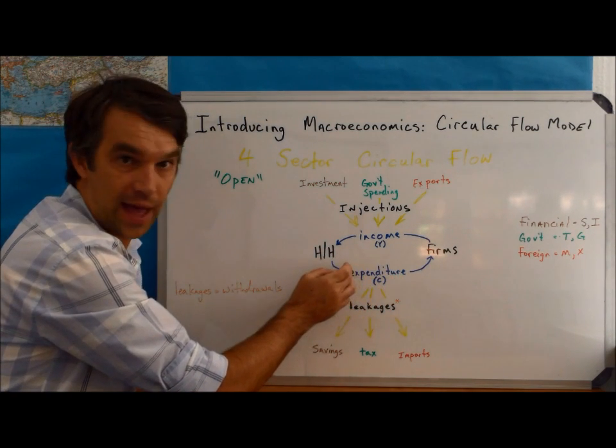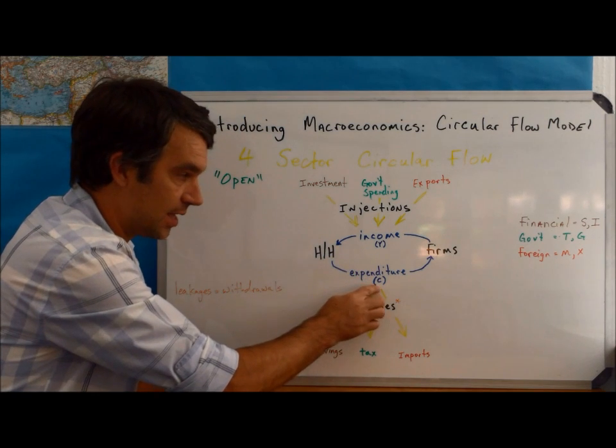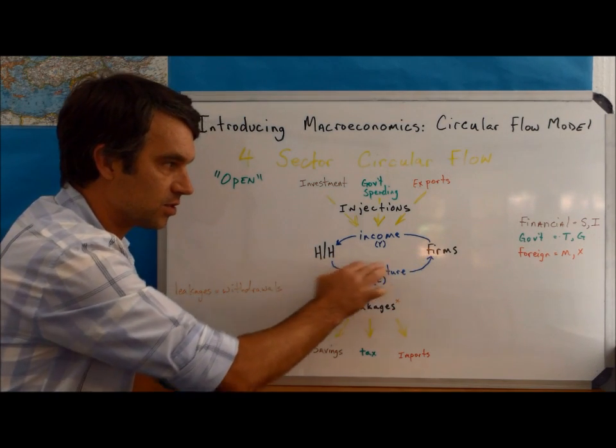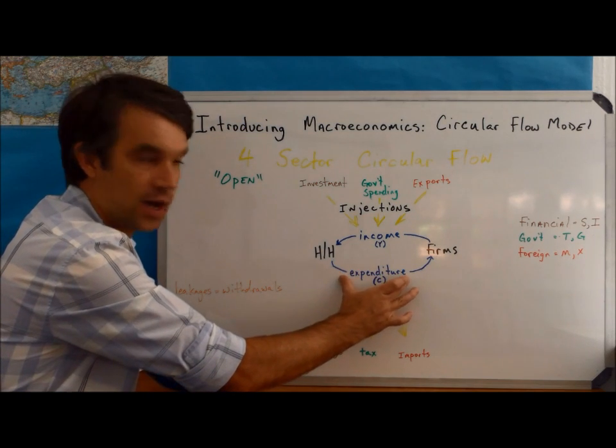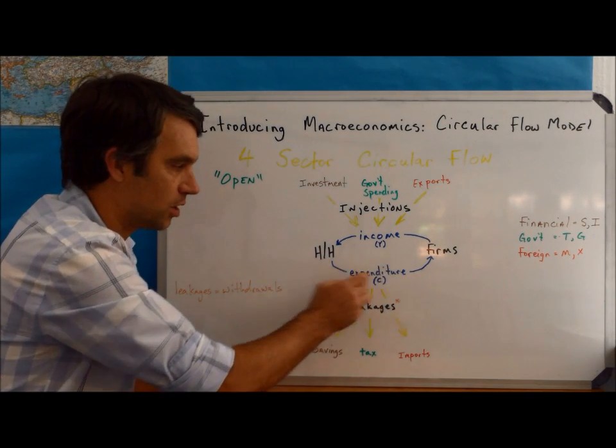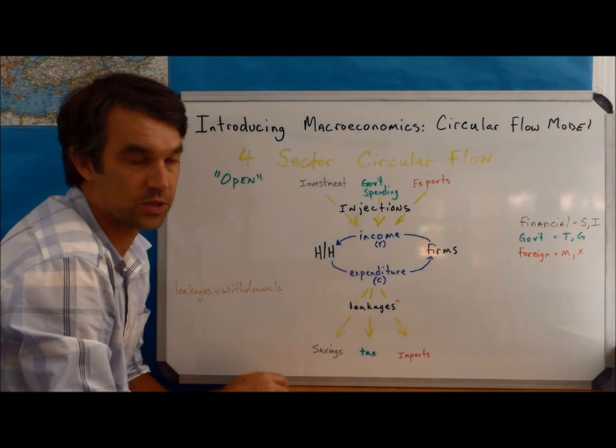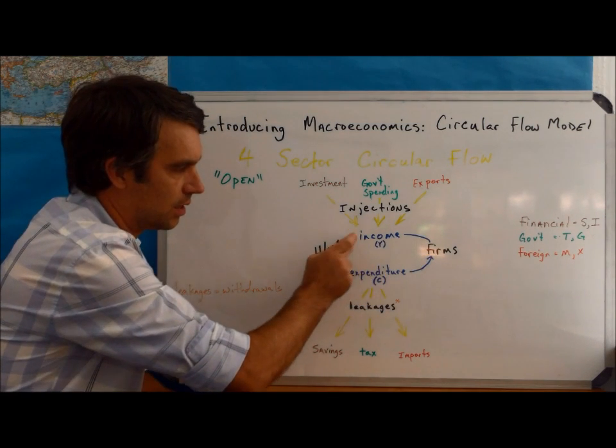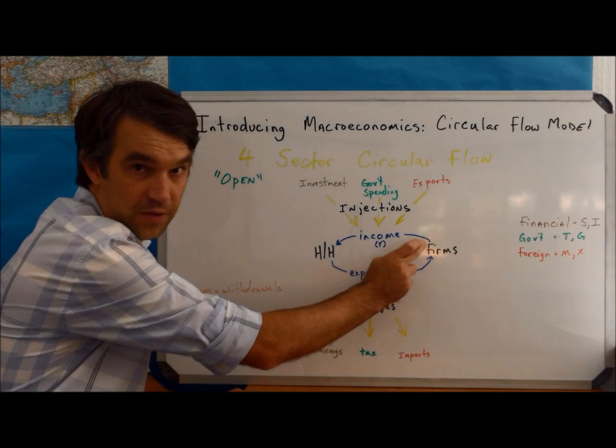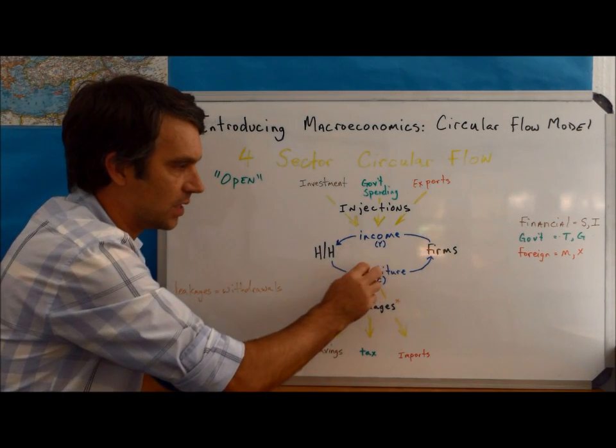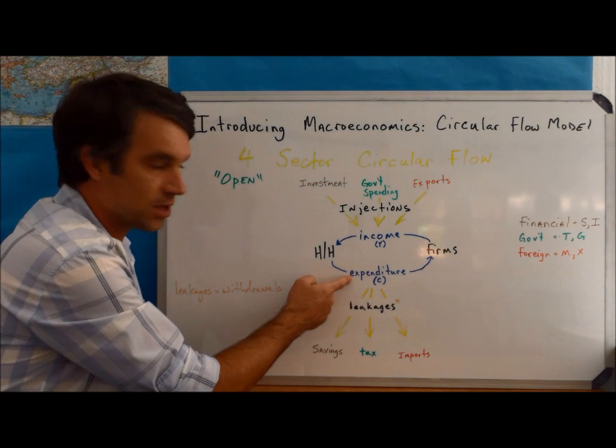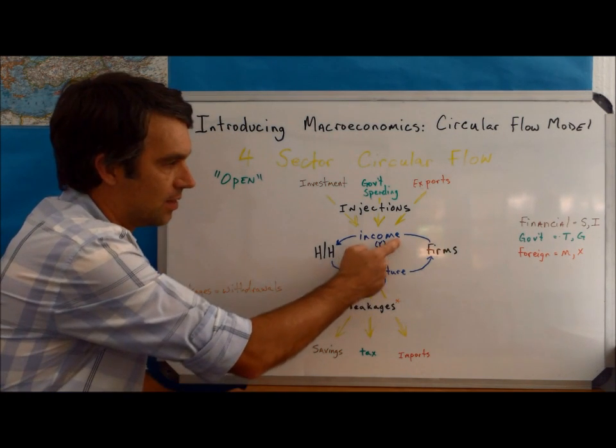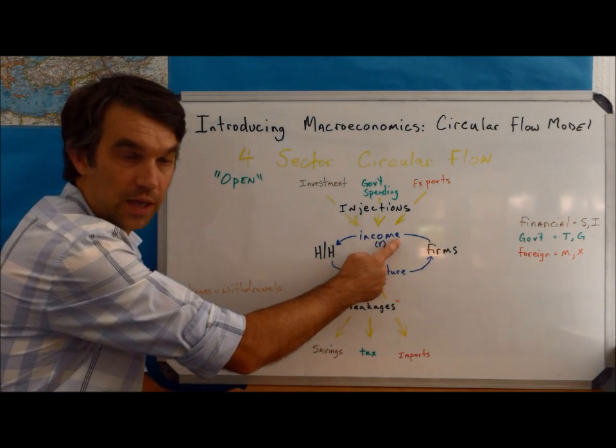But instead of looking at their expenditure, C, along with the goods and services as a flow coming back, we've just reduced that and we're only talking about the money, the expenditure, from households to firms. Likewise, instead of looking at the income in return for the factors of production, that's been condensed and that's income there. So this is the goods and services market and this is the resource market here.